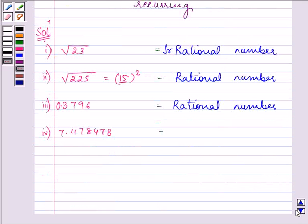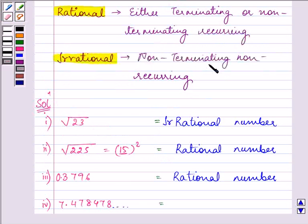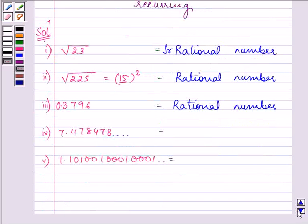Proceeding on, 7.478478 goes on and on in the same process, so that means it is a non-terminating and also a recurring decimal type. So the fourth part will be classified as irrational.